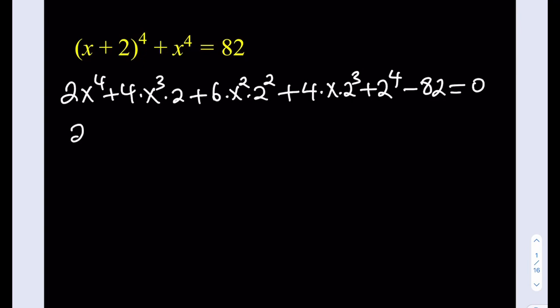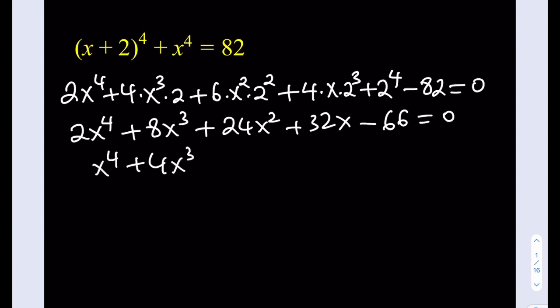Okay, fine, if you want to do it that way, that's fine. So this will be 8x cubed plus 6 times 4 is 24 and 4 times 8 is 32. Fine, 16 minus 82 is going to be negative 66. This equation, everything can be divided by 2. Let's simplify a little bit. All right, and then this is what we get.